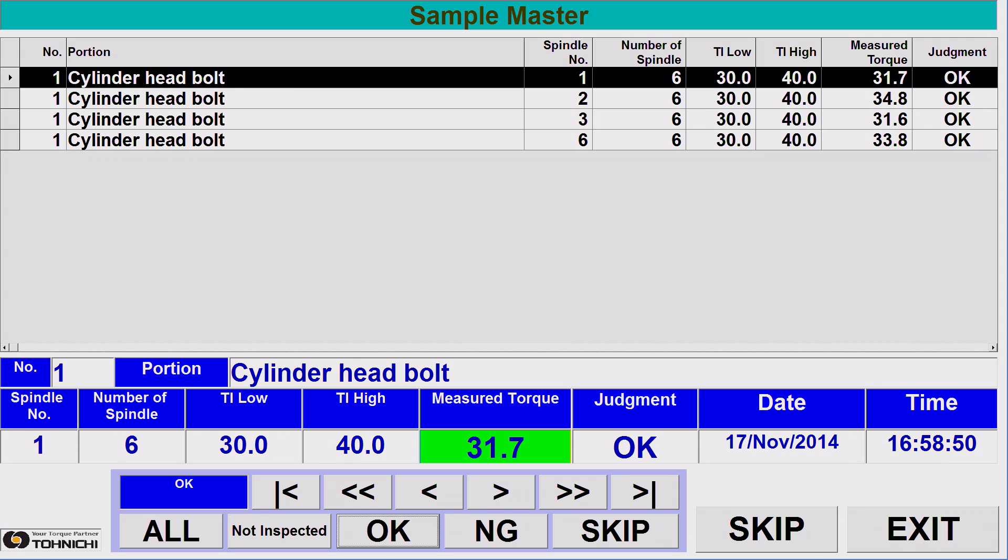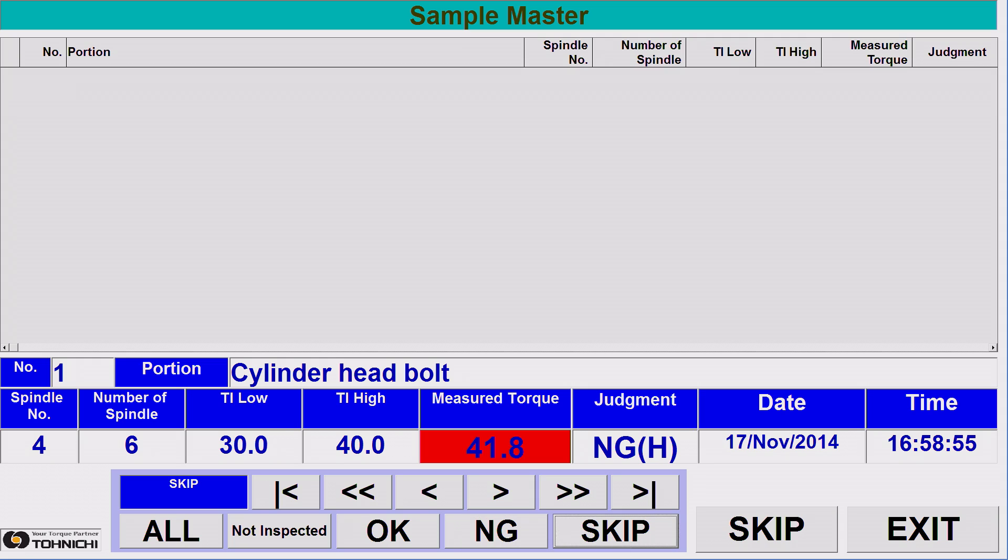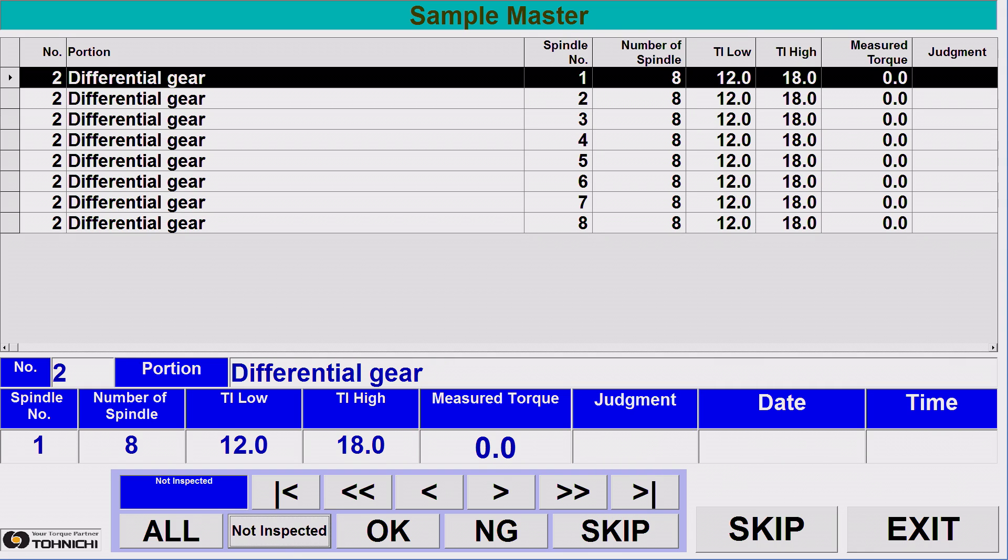By using the function keys, it is easy to review the work processes. You can confirm all data, OK and NG data, skipped process and by pressing not inspected key indicates the process has not been conducted yet.